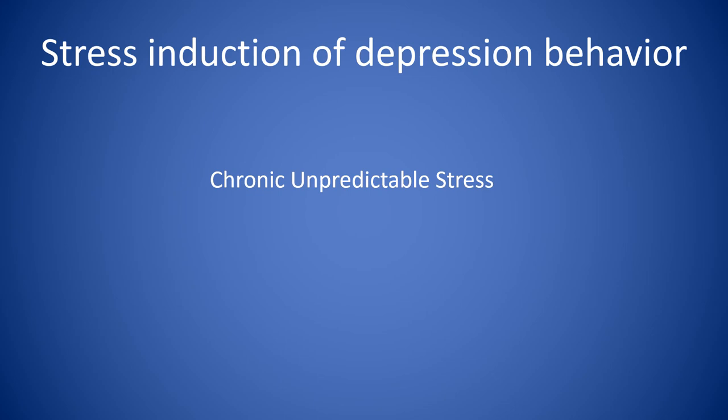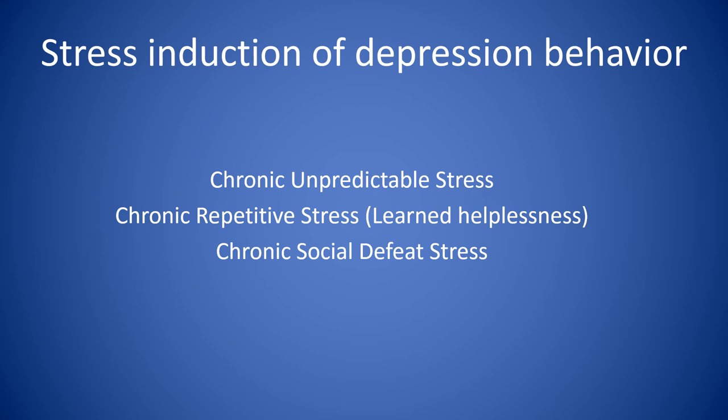Namely, I could use three animal models of stress: chronic unpredictable stress, chronic repetitive stress, and chronic social defeat stress, and ask how stress impacted brain biology.